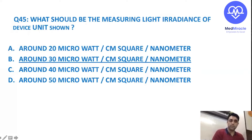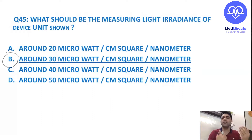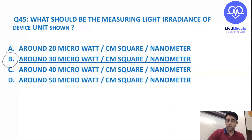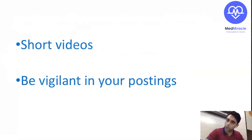Around 30 microwatt per centimeter square per nanometer is the measuring irradiance of the phototherapy unit. For final year MBBS students, whatever cases you see in general — a nasogastric tube, a phototherapy unit, an IV cannula, a suction catheter — all these can come as image-based spotters in the exam. Short videos play a very important role; in recent AIIMS exams many short video-based questions were asked. You have to be very vigilant in your postings — third-year MBBS students, final year, and interns.